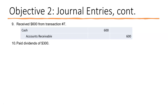Transaction ten — the last one: paid dividends of $300 to our stockholders. That's done by showing an increase in dividends of $300 with a debit, and a decrease in cash of $300 with a credit. So debit dividends $300, credit cash $300.